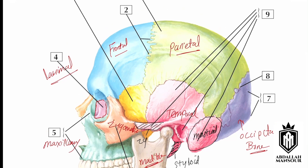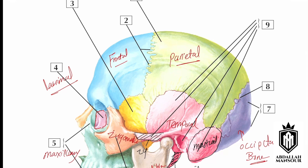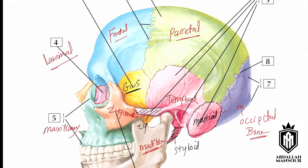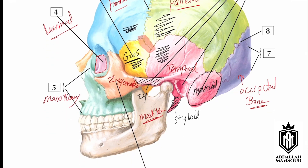The yellow bone, number three, is called the greater wing of the sphenoid. An important exam question concerns the pterion. The pterion is a structure that connects between four different bones: the frontal bone, the greater wing of the sphenoid, the squamous part of the temporal bone, and the parietal bone.